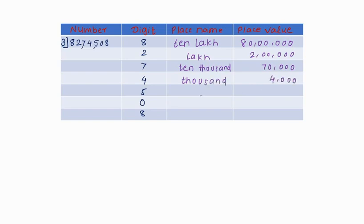Next digit 5: place name is 100 and place value is 500. Next 0: place name is 10 and place value is 0. Next 8: place name is unit and place value is 8.